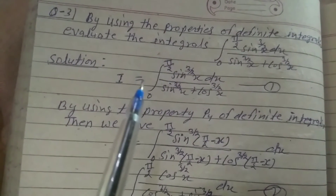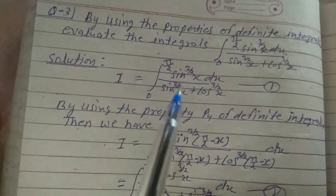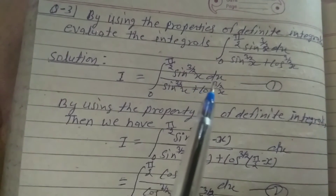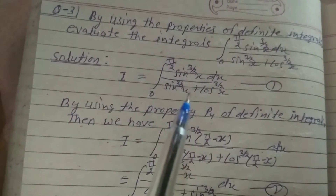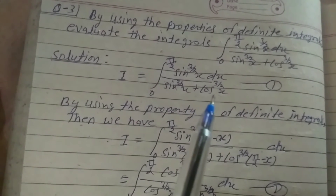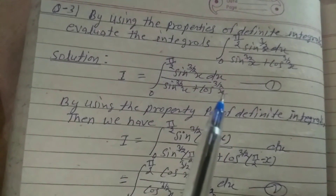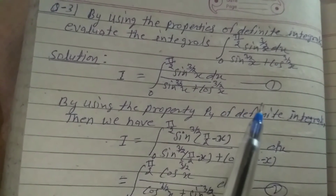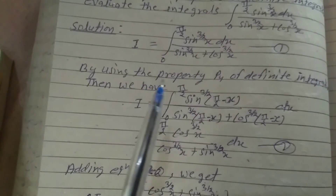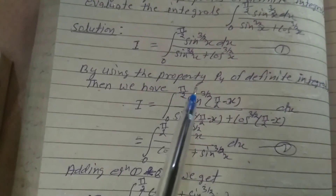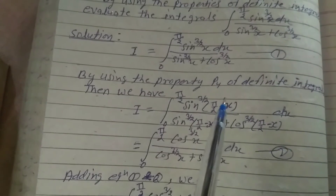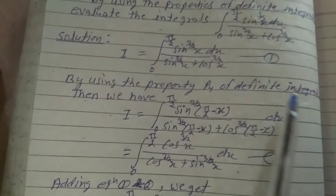Solution: Let I equal the integral from 0 to π/2 of sin^(3/2)(x) dx divided by sin^(3/2)(x) plus cos^(3/2)(x) — call this equation 1. By using property P4 of definite integrals: